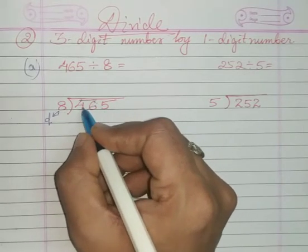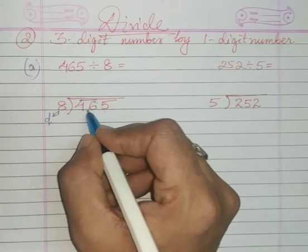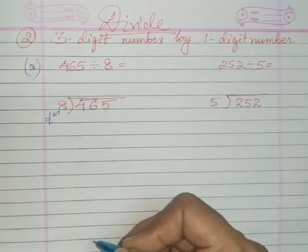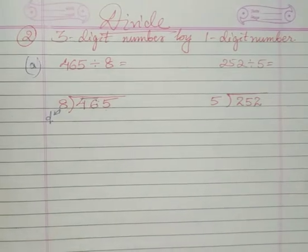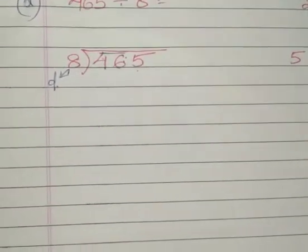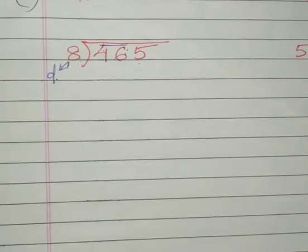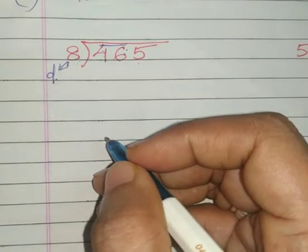Now what you are going to do is take two digits, 46. Now 46 divided by 8, let me take it more so that you can see. Okay, now see.